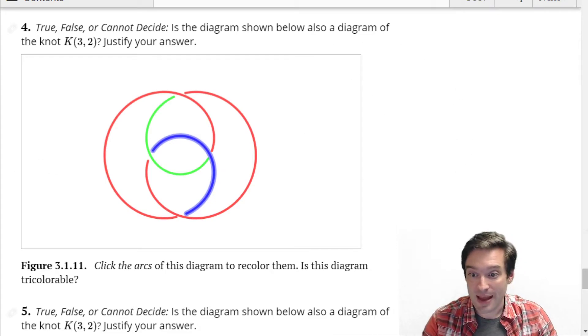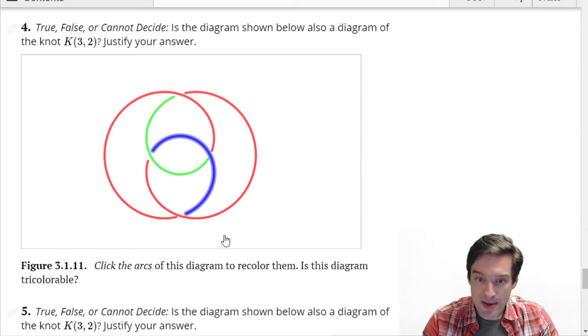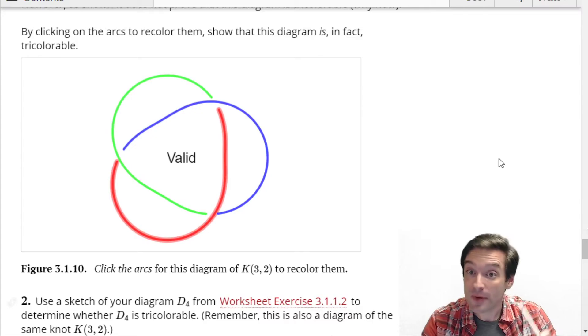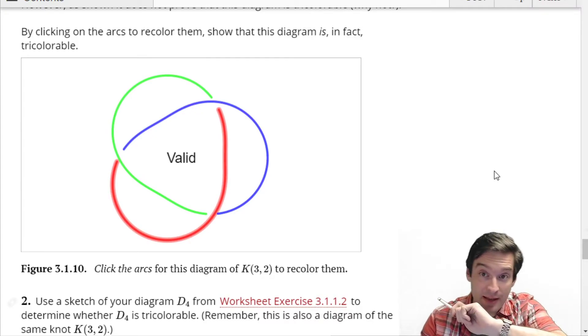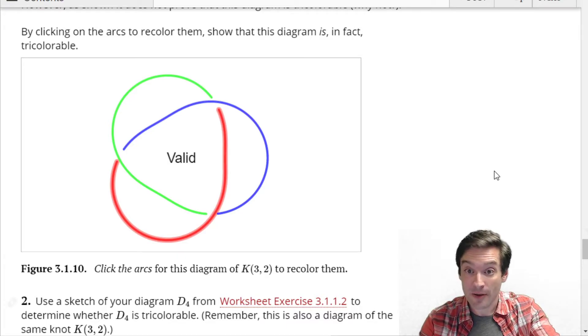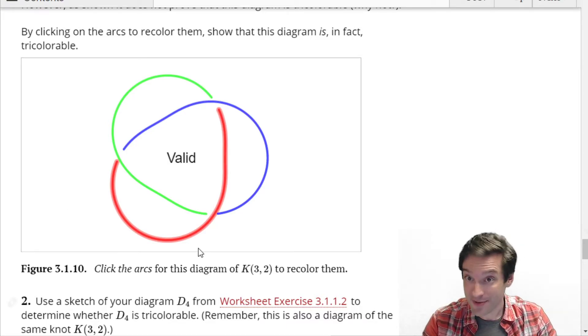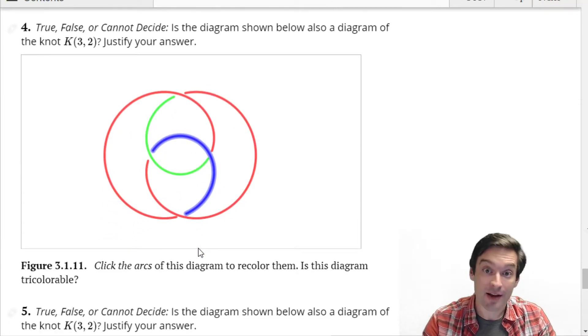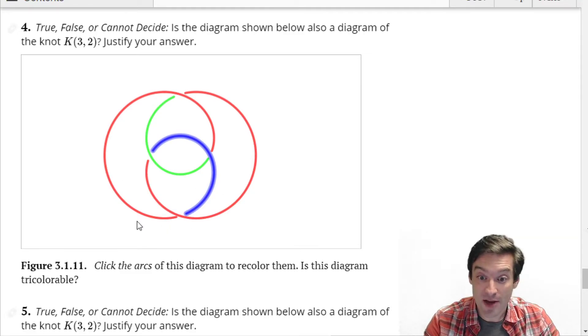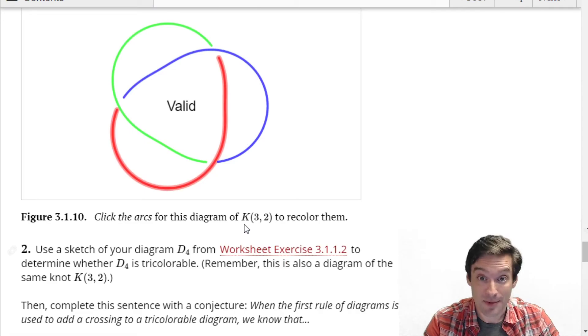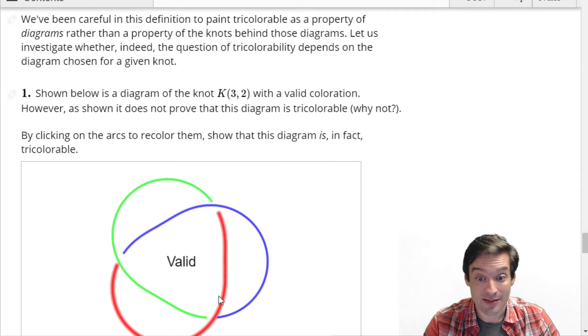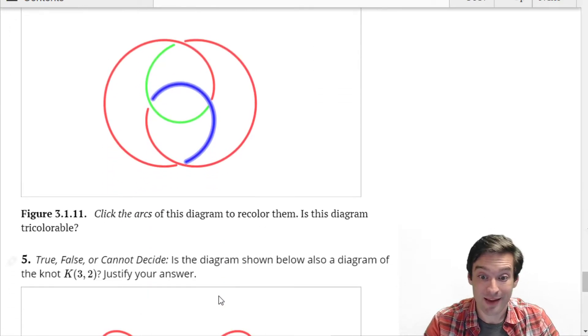So we decide this is not a tricolorable knot diagram. So what does that mean about the knot that this diagram represents? What can we say for sure? It's not the 3-2 knot. It's not the trefoil. If we believe that tricoloration is a knot invariant, then every diagram of the trefoil will have to be 3-colorable. This one is, but this diagram is not, and therefore this cannot be a diagram of the trefoil, right? So invariance means every diagram of this knot has to have that property. And so if I can find even a single diagram of some knot that doesn't, that diagram can't represent the same knot that we started with. So whatever knot this is, it's not the trefoil. Because the trefoil is tricolorable, and this one isn't.